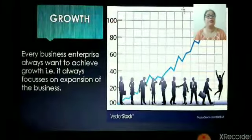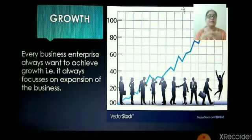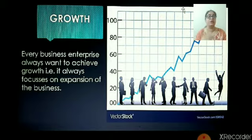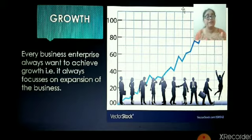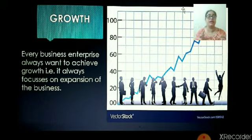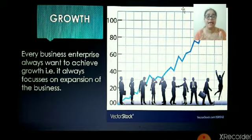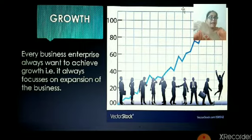The second economic objective is growth. No business ever wants to be stable at one place; every business wants to achieve the heights gradually in life. Growth is the second objective which every business wants to achieve. Every business enterprise always wants to achieve growth as it focuses on expansion of the business, because growth can be achieved by expanding the horizons of the business. If a business has started from a small scale, it always wants the scale to be increased — from small scale it moves to medium scale, and from medium scale it moves to large scale business. Like this, the graph of growth of the business goes on increasing.